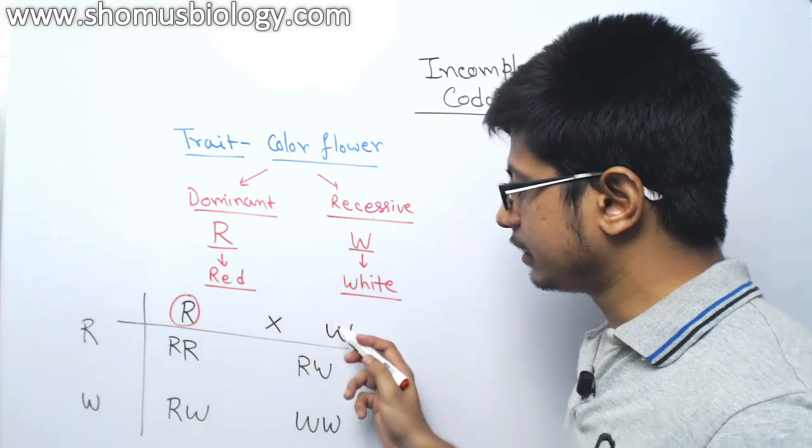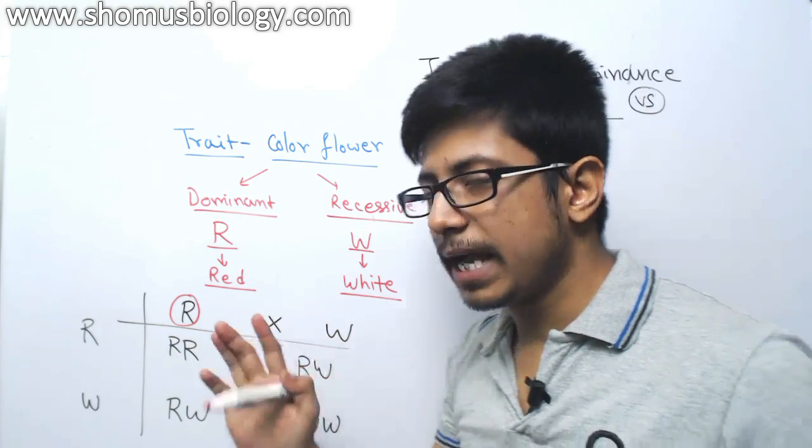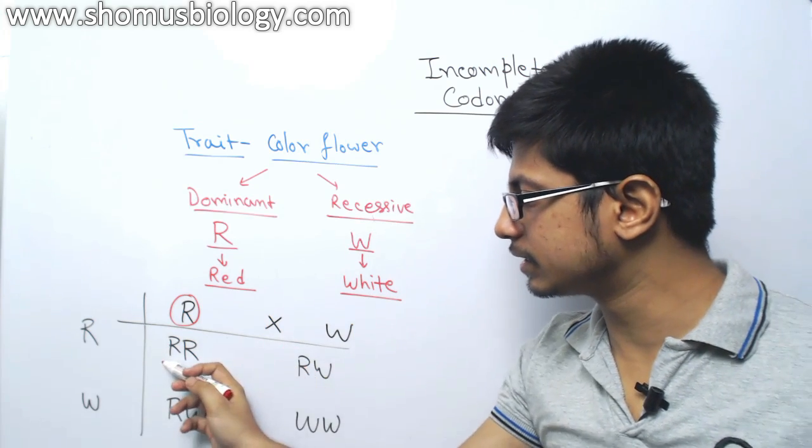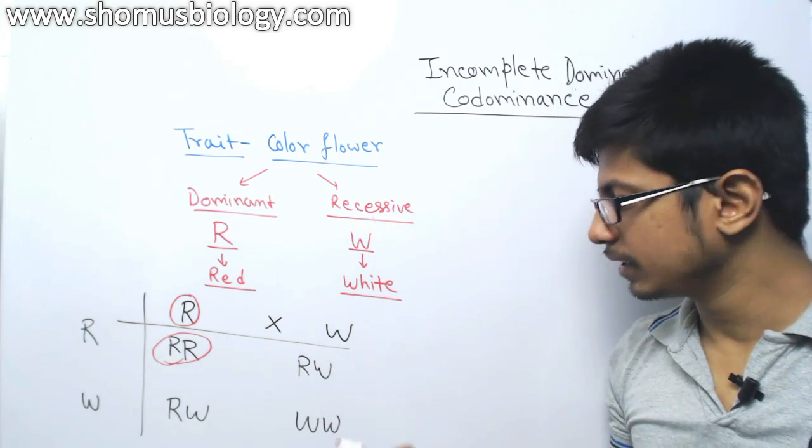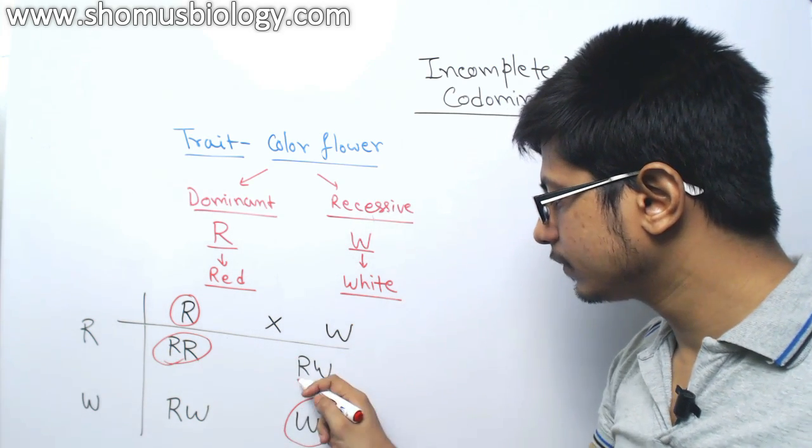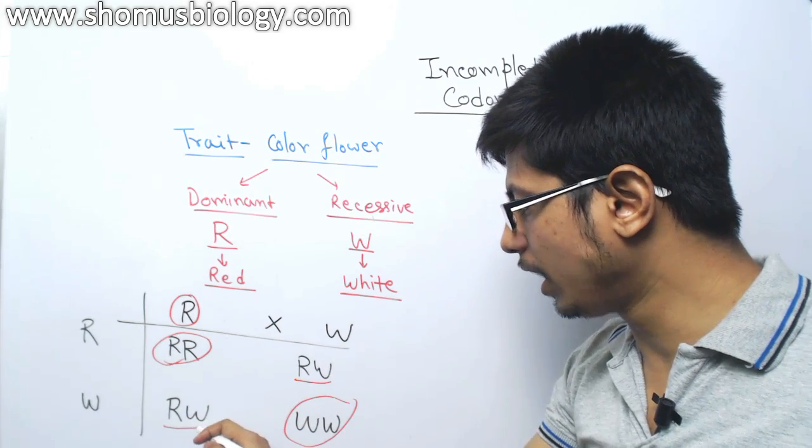But here, even if this is a dominant, this is a recessive. See, according to the Mendel inheritance all of them should be red. But in this case, you see, this is a red. This is white because homozygous for that.